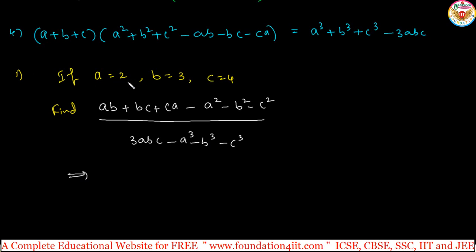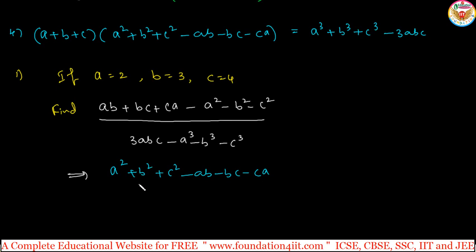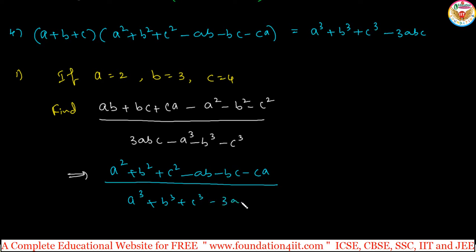Do not substitute directly the values 2, 3, 4 and make this lengthy. We need to apply the formulas. Multiply numerator and denominator by minus one to change the sign, so the numerator becomes a squared plus b squared plus c squared minus ab minus bc minus ca. Similarly, the denominator becomes a cubed plus b cubed plus c cubed minus 3abc.